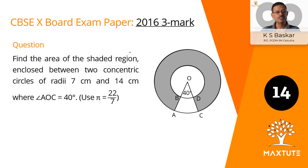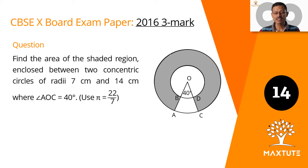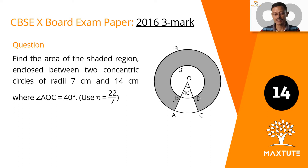This is a geometric question. The objective is to compute the area enclosed between two concentric circles, with a small twist. Find the area of the shaded region enclosed between two concentric circles of radii 7 centimeters and 14 centimeters. The radius of the outer circle is 14 centimeters and the radius of the inner circle is 7 centimeters. These are concentric circles with the same center, where angle AOC is equal to 40 degrees. We need to use pi as 22 by 7.